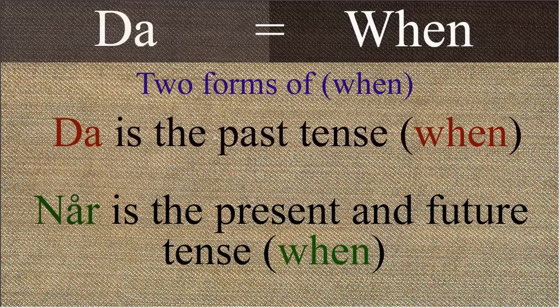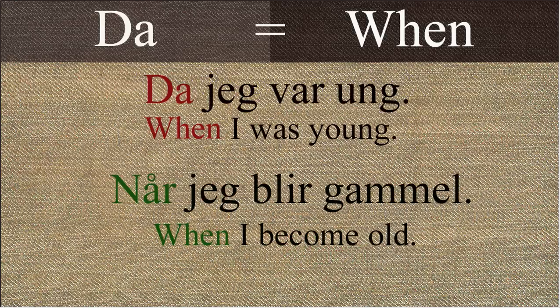Sometimes 'da' means 'when'. There are two forms of 'when' in Norwegian: 'da' is the past tense and 'når' is the future tense. This is pretty easy to remember. Here are two sentences you can practice: 'Da jeg var ung' — when I was young; 'når jeg blir gammel' — when I get old, when I become old.